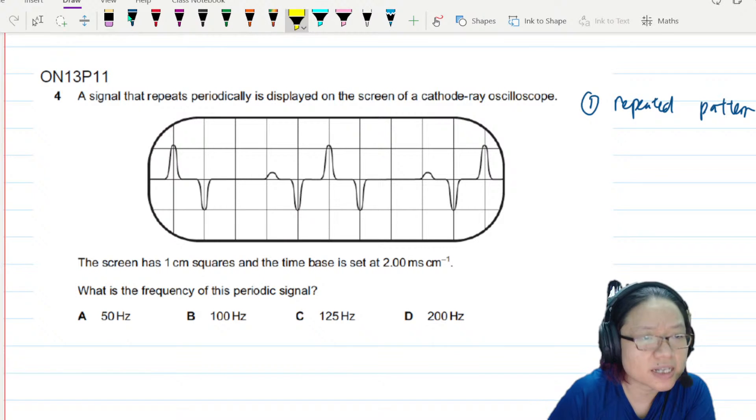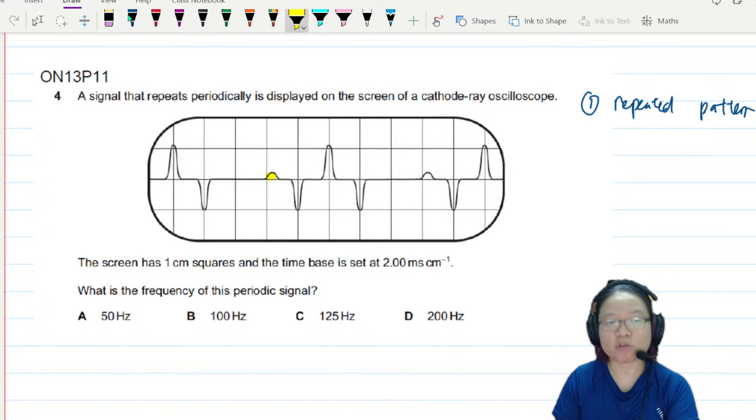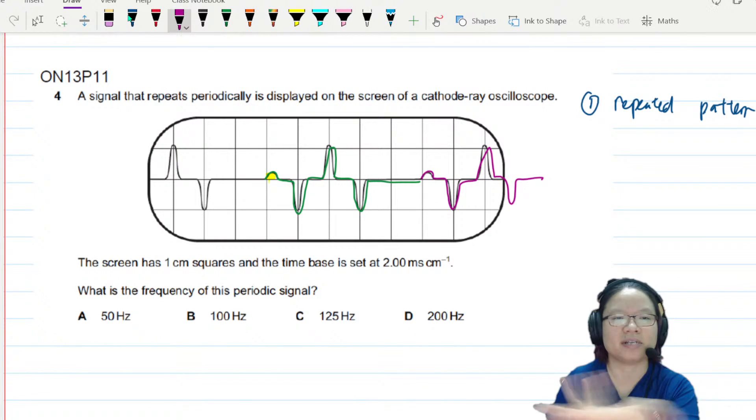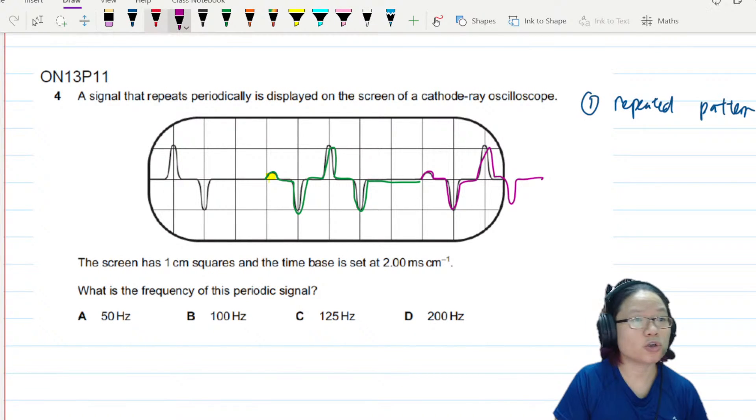I think I would treat this little nub here as the start of my repeated pattern. If I look at this one, it will go up, come down, go up, come down, and then end. So this is one repeated pattern, and the pattern repeats itself again here—go up, come down, go up, and then supposed to come down then end, but it doesn't fit into the screen.